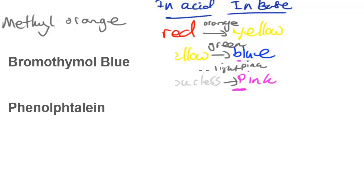Those are the transitions involved for these indicators. In the next video I'll be working through some calculations, and in another video I'll explain the concept of indicators in more detail — that's more of an A2 chemistry idea, but I'd like to cover it. That's the end of this video — see you in the next one.